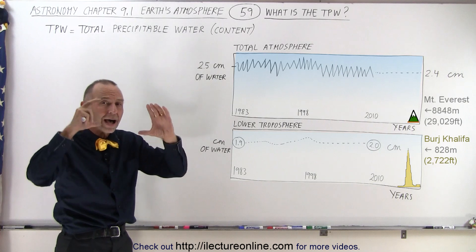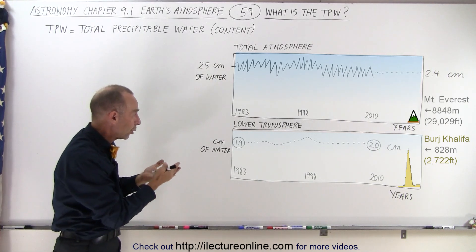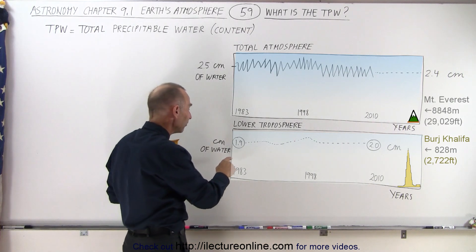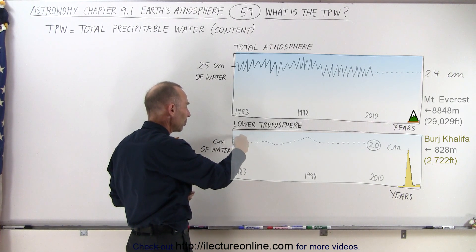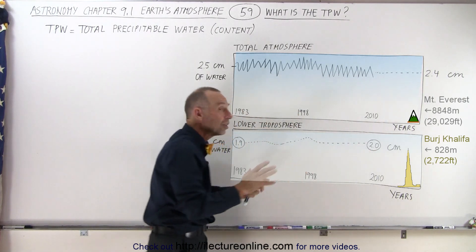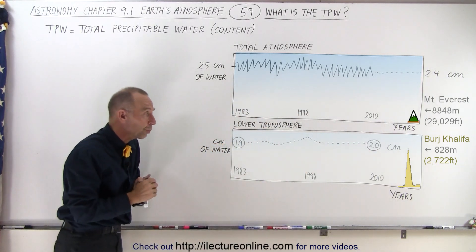But if we separate the higher regions of the atmosphere from the lower troposphere and look at the lower troposphere by itself, we can see that we started out with about 1.9 centimeters in the lower troposphere, but that increased to about 2 centimeters.